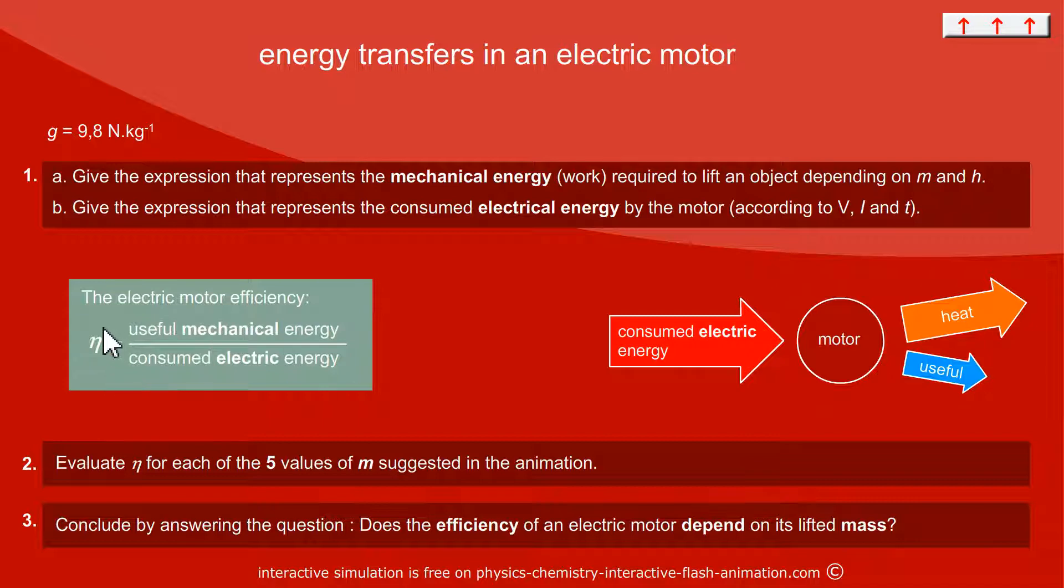The Greek symbol η is generally used to represent efficiency. I will do this for 5 values of mass and try to see if the efficiency depends on the mass or if it is an absolute characteristic of the motor.